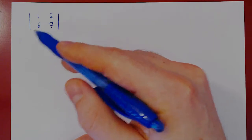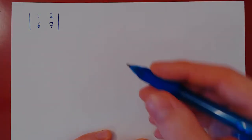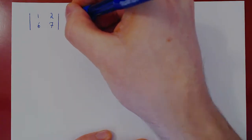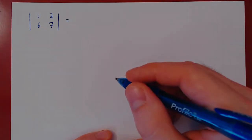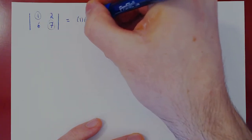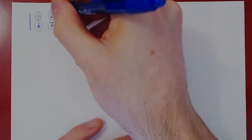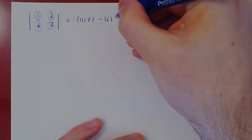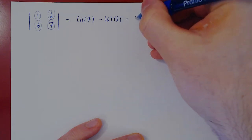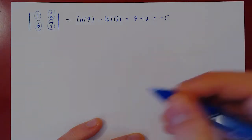Our first example: the determinant of the 2 by 2 matrix with entries 1, 2, 6, 7. As always, when we have a 2 by 2 matrix, we can simply do AD minus BC. So we have 1 times 7 minus 6 times 2, which gives us 7 minus 12, which gives us negative 5. And we're done.